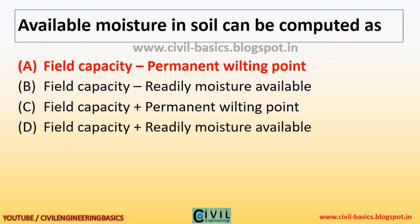Available moisture in soil can be computed as the field capacity minus permanent wilting point.